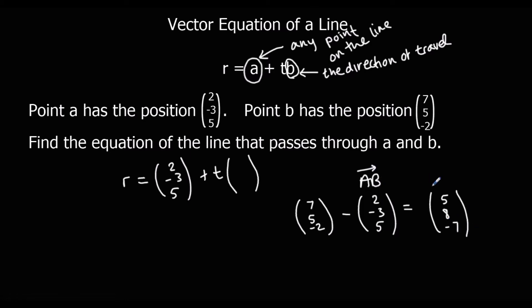So to get from a to b I go up 5, up 8, down 7, so I can just fill that in. And that is the equation of my line. So if you substitute in different values for t, you'll get different positions out, but all of those positions will be along that line.